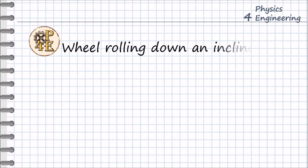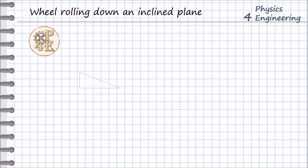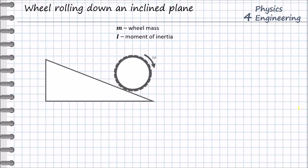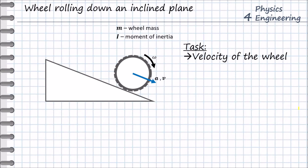Hey, this is Physics for Engineering. Our problem for today is a wheel rolling down an inclined plane. We have a hill and we have a wheel. The wheel has a mass m and moment of inertia I. The wheel rolls downhill without slipping, with angular velocity omega, with linear acceleration a and with linear velocity v. Our task for today is to find the velocity of the wheel at the end of the hill and to find its angular acceleration.